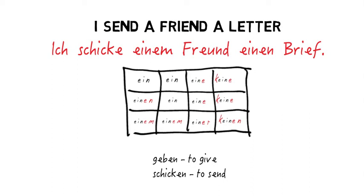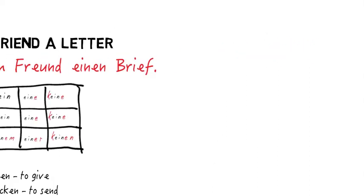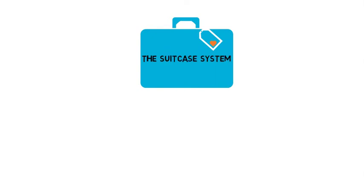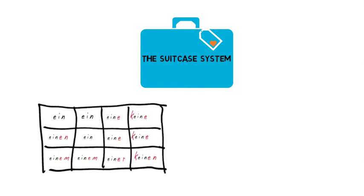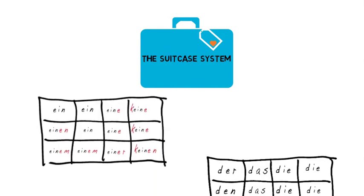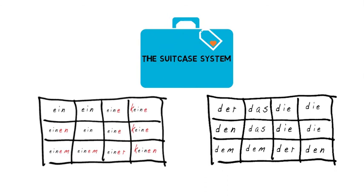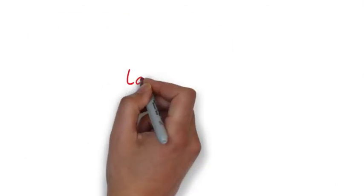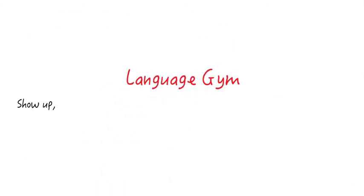You've got to do a few of these using the verbs I give you in the exercises. Use your article grids — it's actually kind of fun. And it's empowering to lay down this first cornerstone of the suitcase system. There's more, but this is the foundation. That's it for now. As always, this is Language Gym. Show up. Work out.